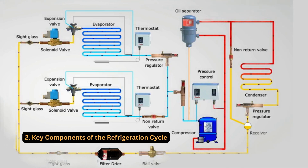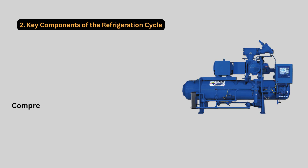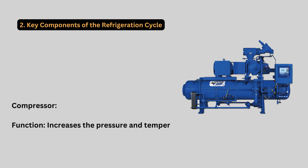Key components of the refrigeration cycle. Compressor. Function: increases the pressure and temperature of the refrigerant vapor. Types: reciprocating, screw, centrifugal. Principle: compresses refrigerant, converting it from a low-pressure gas to a high-pressure gas.